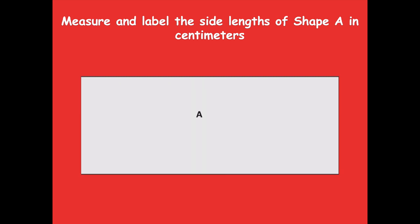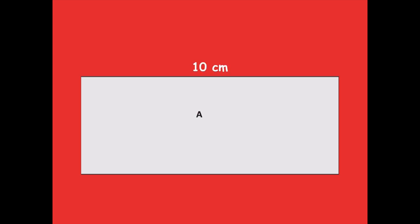Here are the measurements I came up with: 10 across the top, 10 across the bottom — because it's a rectangle, opposite sides are equal — and both sides are four centimeters. If you didn't get those measurements, pause the video and go back and remeasure, because you should have 10 centimeters for the top and the bottom and four centimeters for the left and right sides.